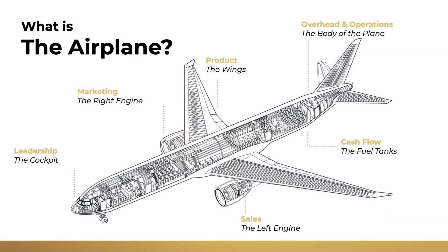Cockpit is administration, right engine is marketing, left engine is sales, body is operations and customer service, wings are products and services, and fuel tanks are financials.